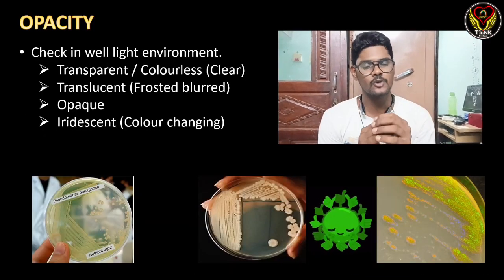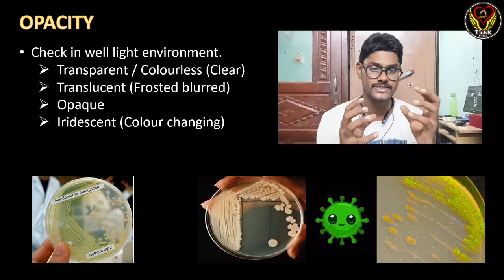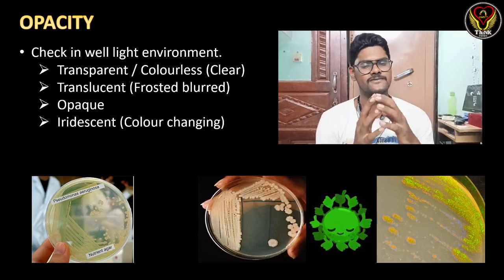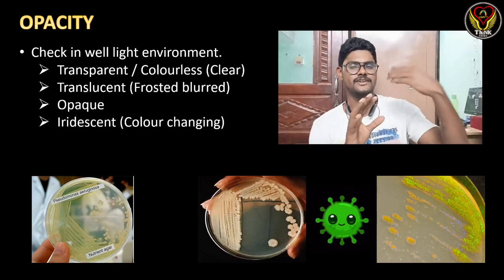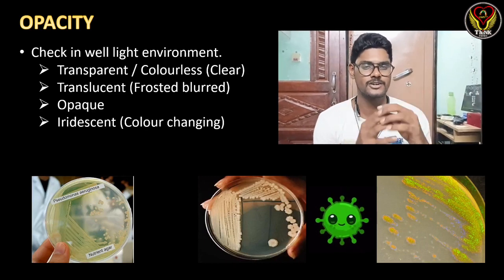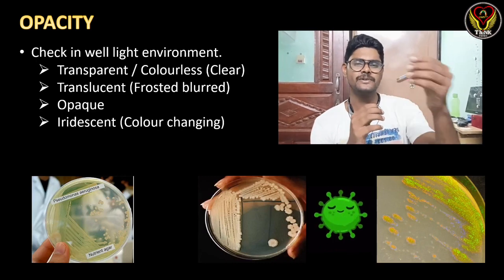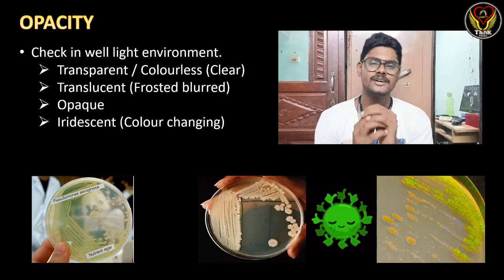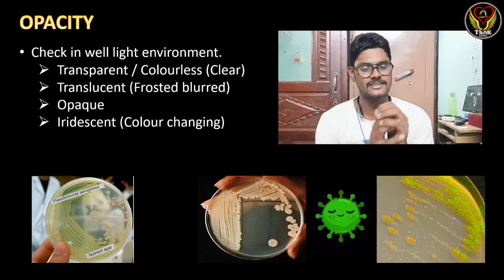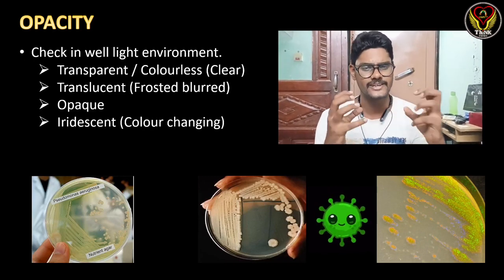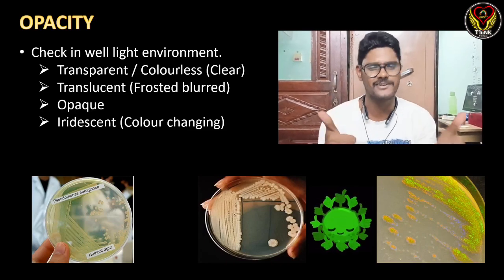Next is opacity — how much light is transferred or allowed to pass through the colony. We check this in a well-lit environment. The types are: transparent (colonies transmit all light, colorless and very clear), translucent (slightly blurry but allows light to pass), opaque (completely blocks light), and iridescent (radiates different colors under different light exposure).